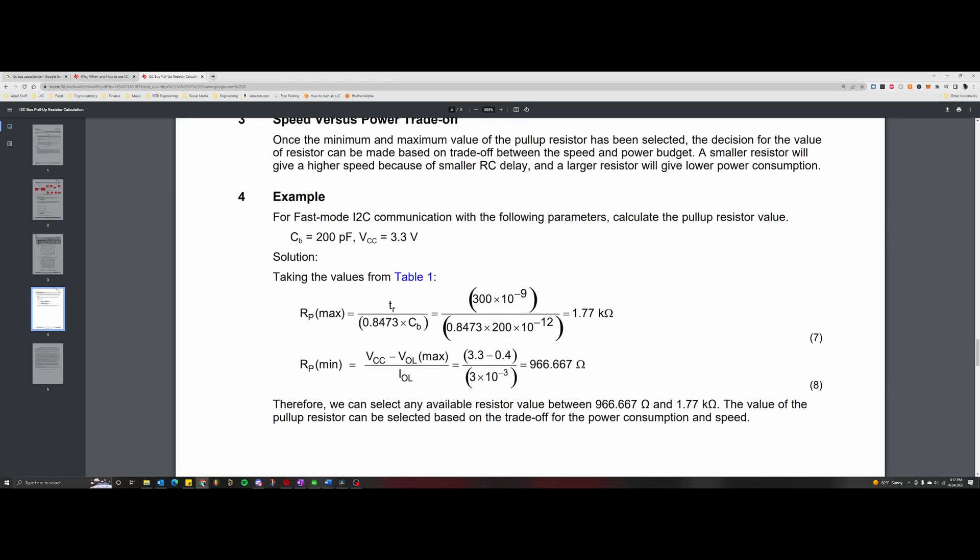Now that we have the equations for our minimum and maximum pull-up resistor values, let's go ahead and look at an example. In this example we have an I2C bus operating in fast mode with the following parameters: total bus capacitance is equal to 200 picofarads and the VCC value is equal to 3.3 volts.